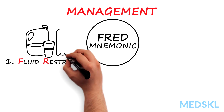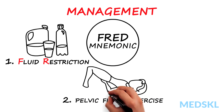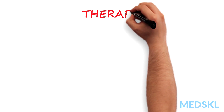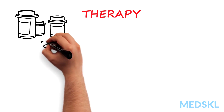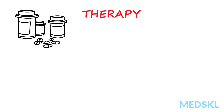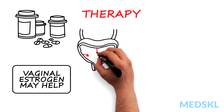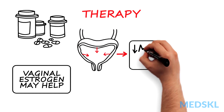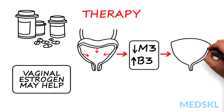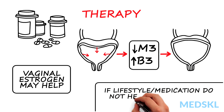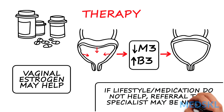As with stress incontinence, the FRED mnemonic provides a helpful initial management approach: fluid restriction, pelvic floor exercises, and bladder drill. The mainstay of therapy for overactive bladder is pharmacologic. If there is vaginal atrophy, vaginal estrogen may help. Anti-muscarinic agents block parasympathetic bladder contraction, and beta-3 agonist agents inhibit bladder contraction. If lifestyle and medication do not help, referral to a specialist may be needed.